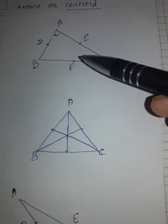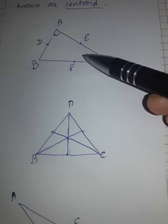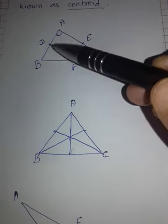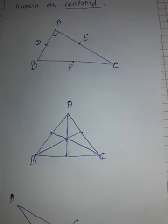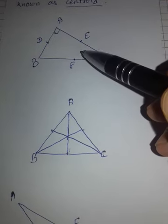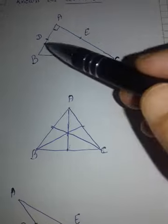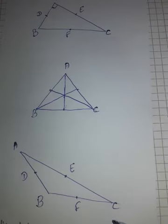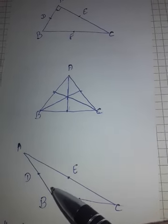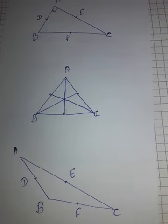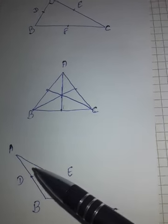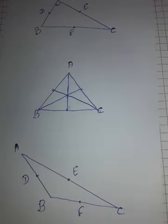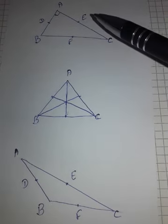Here this is an acute angle triangle — all three angles are less than 90 degrees. I have also drawn a right angle triangle, where one angle is 90 degrees, so the remaining two are naturally acute because the sum of all angles is 180. This is known as a right angle triangle. And this is an obtuse angle triangle, where one angle is greater than 90 degrees and the other two are less than 90 degrees. In all these triangles, we can draw medians.